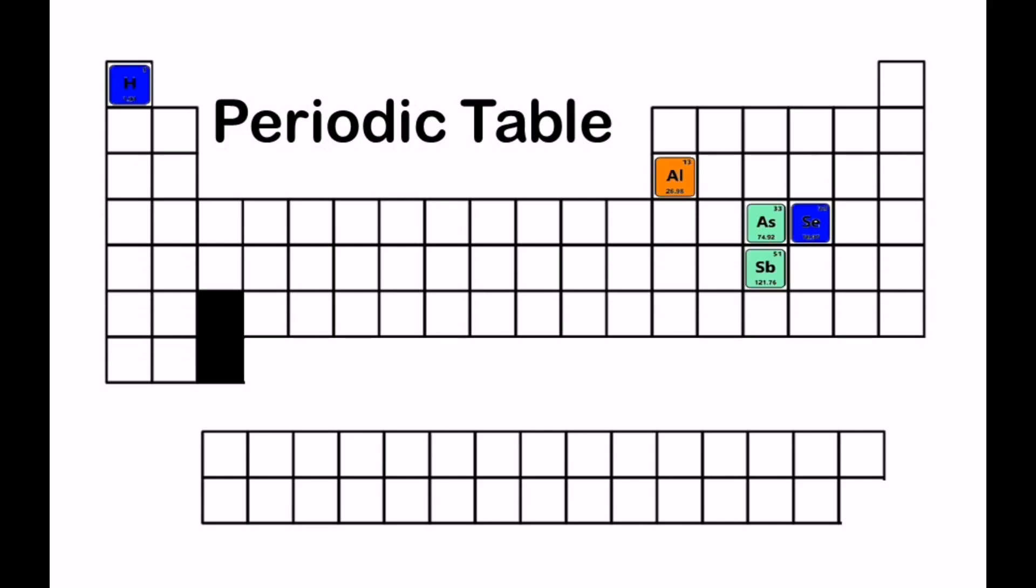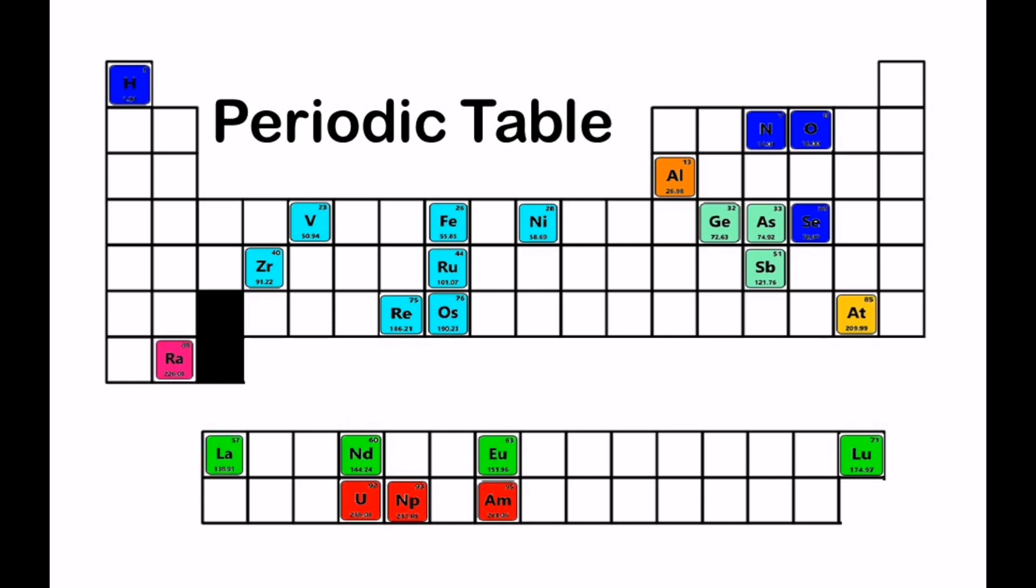There's antimony, arsenic, aluminum, selenium, and hydrogen and oxygen and nitrogen and rhenium and nickel, neodymium, neptunium, germanium and iron, americium, ruthenium, uranium, europium, zirconium, lutetium, vanadium, and lanthanum and osmium and astatine and radium and gold, protactinium and indium and gallium and iodine and thorium and thulium and thallium.